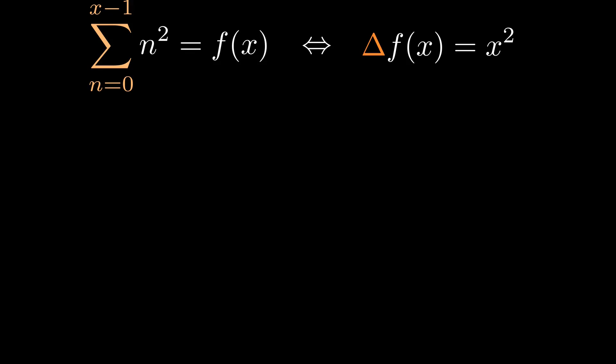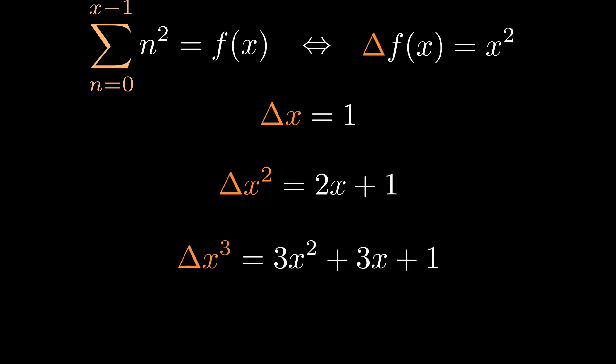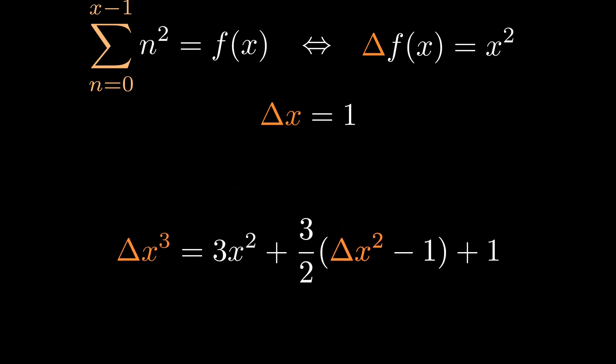Just like how derivatives tend to be easier than integrals, forward differences are easier than sums. We just plug stuff into the definition of delta and simplify. If we rearrange this equation to get x on its own, we can substitute this expression into the x term down here.